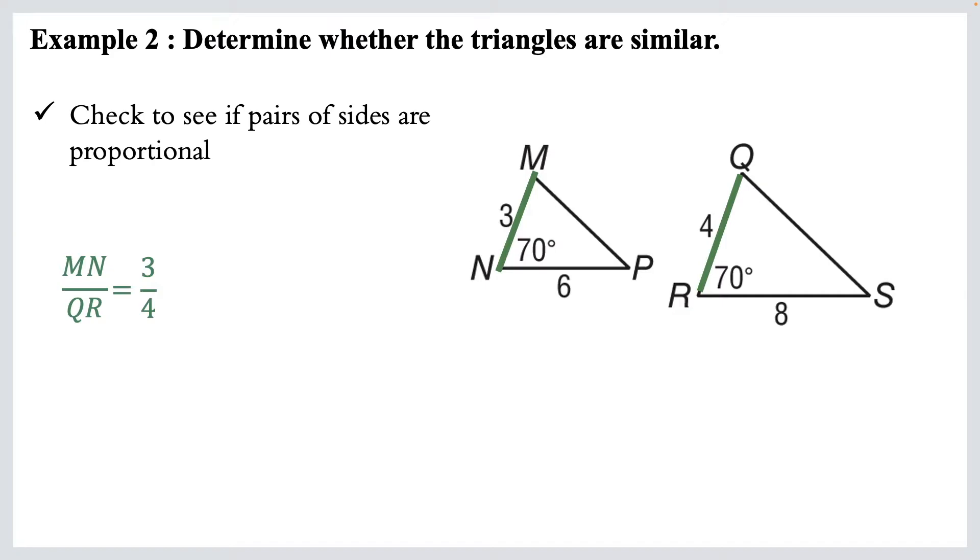And then the other set of sides we have is six and eight. So NP partnering with RS. If we reduce that, we get three over four again.